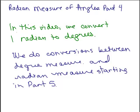We want to find out what one radian is if it's converted to degrees. And then, starting in Part 5, we do a lot of different conversions going from degree measures to radians or from radian measure to degree measures.